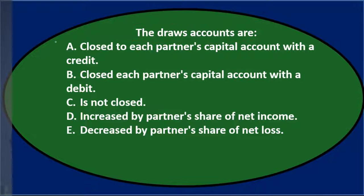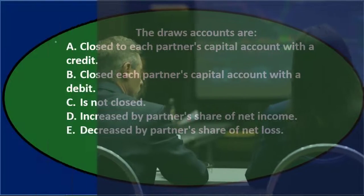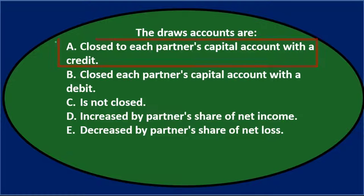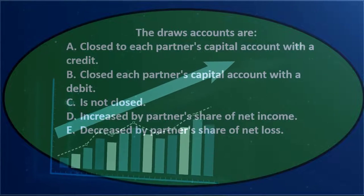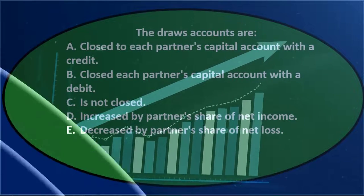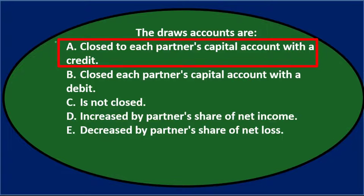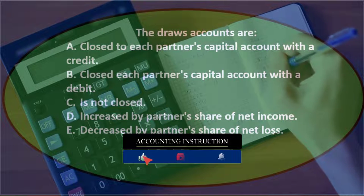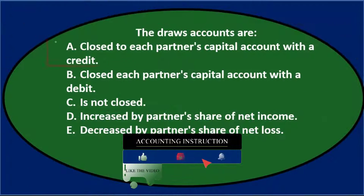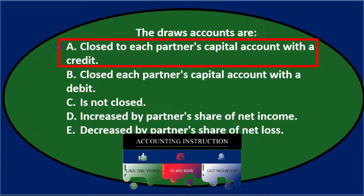The draws account tracks how much has been taken out of the partnership. Hopefully the partnership is generating revenue, increasing the partners' capital accounts, and then the partners are drawing out money for personal use. The draws account is a temporary account and will typically be closed out, so option A — closed out — sounds pretty good. We might get confused about whether it's a debit or credit though.